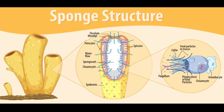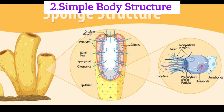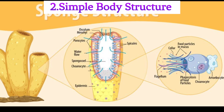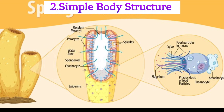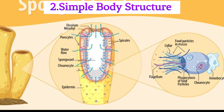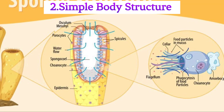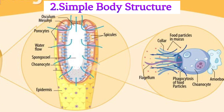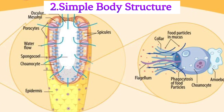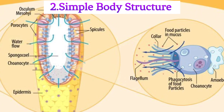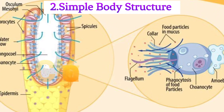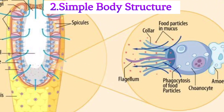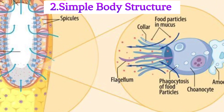Point 2: Simple body structure. Sponges have one of the simplest body structures in the animal kingdom. They lack true tissues and organs, consisting mainly of specialized cells embedded in a gel-like matrix.